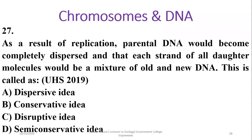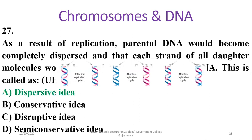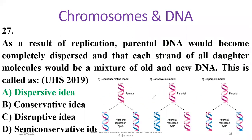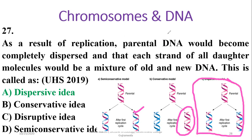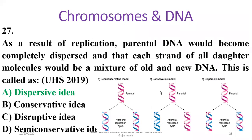Question 27: As a result of replication, if parental DNA becomes completely dispersed so that each strand of all daughter molecules is a mixture of old and new strands, this is called the dispersive model of DNA replication. In semi-conservative replication half the strand is new and half is parental; the conservative model explains parental DNA remaining intact. Alpha is the right option.